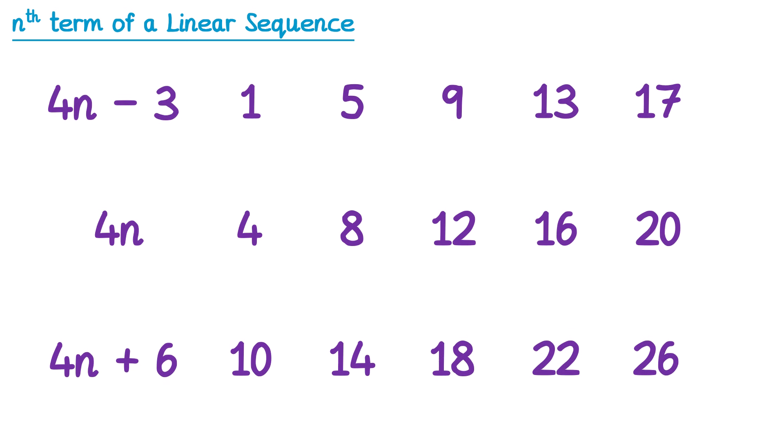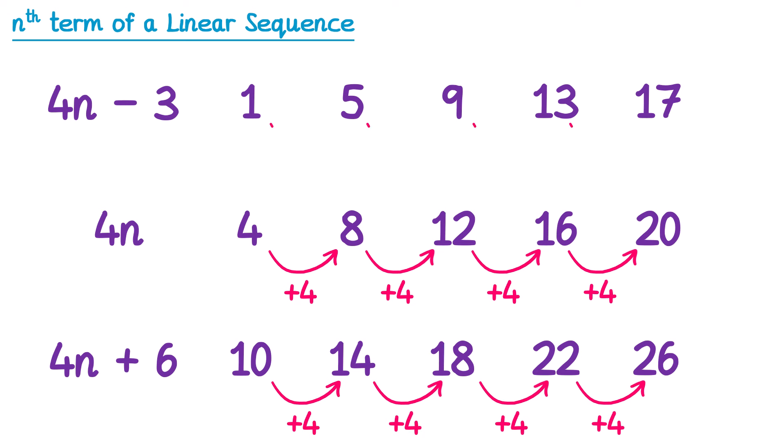Each of these sequences has something in common. In the 4n sequence, to get from one term to the next, you add 4. But you also add 4 in the other sequences here. Notice each of the sequences has 4 in front of the n. So if the sequence always goes up by 4, we know its nth term will have a 4n in it. The only difference between the sequences is where they start — 4n begins at 4, 4n minus 3 began at 1, and 4n plus 6 starts at 10.